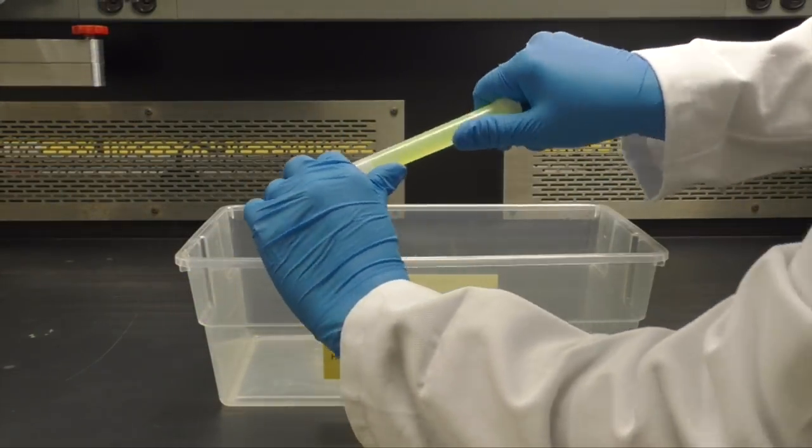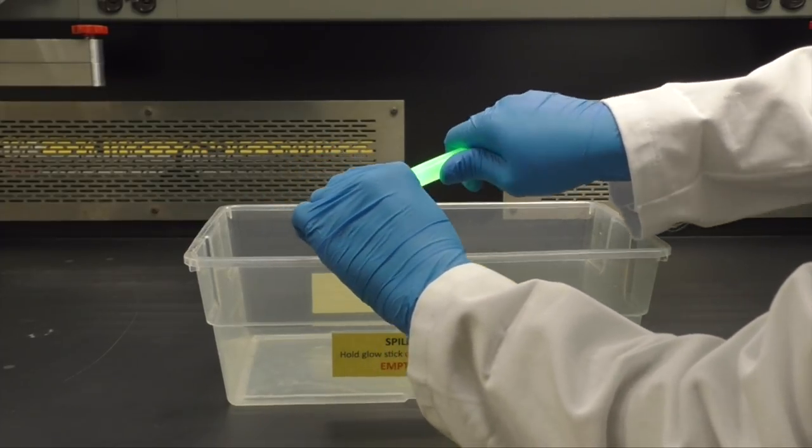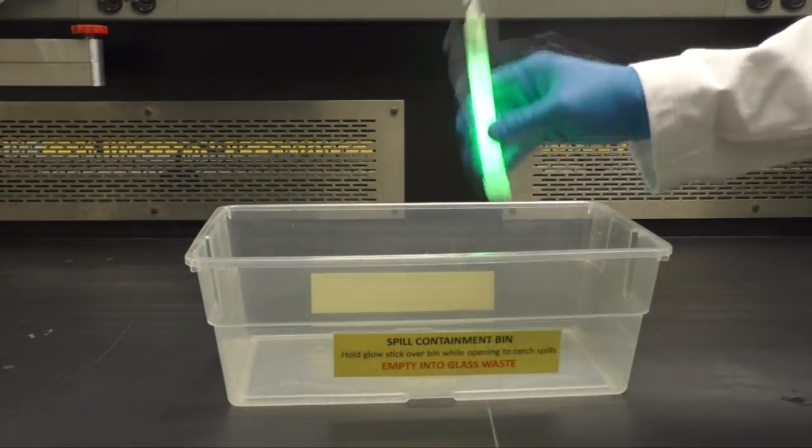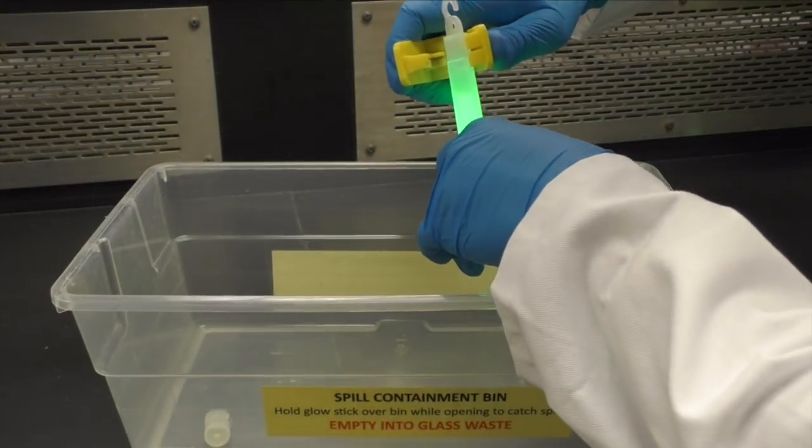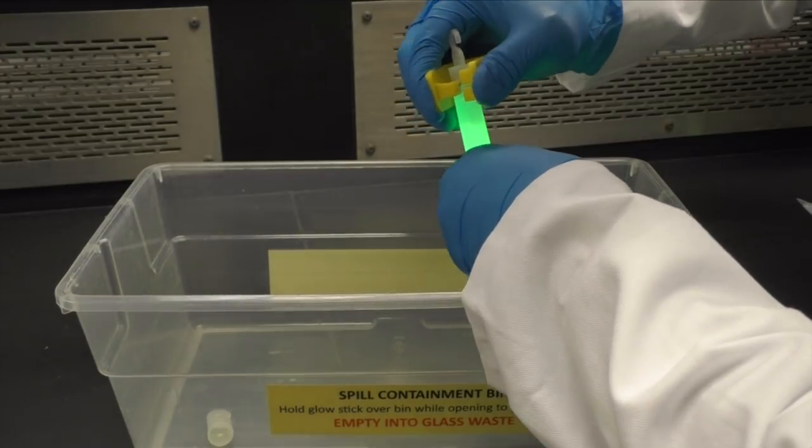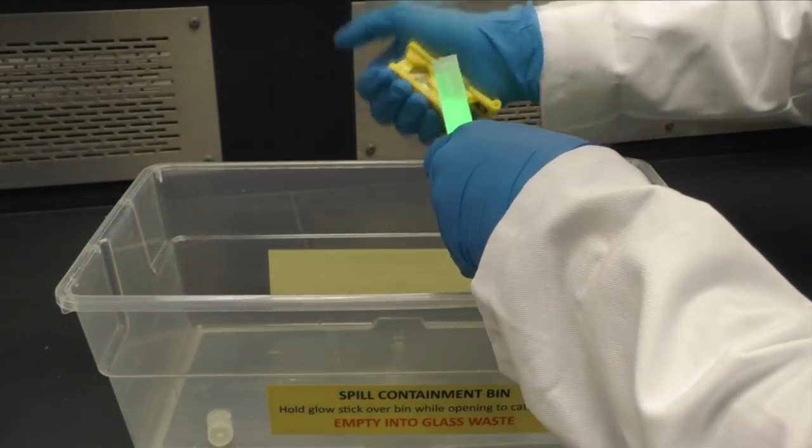Activate the glow stick by snapping the inner glass tube and shake it well so it begins glowing. Now hold the glow stick upright over the spill bin and apply pressure to the top part of the glow stick using the tubing cutters to snip off the top.